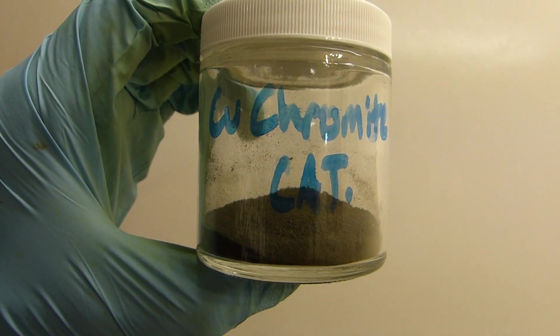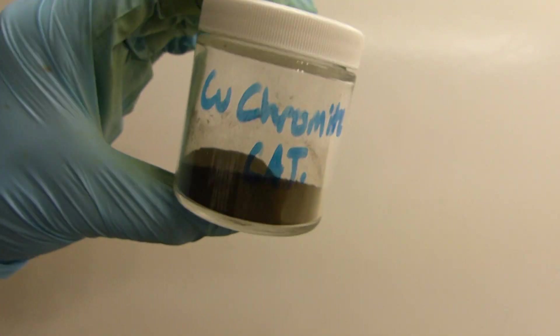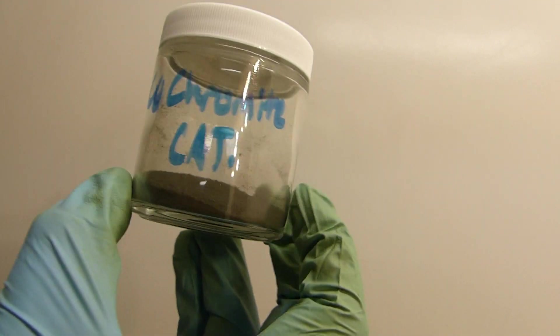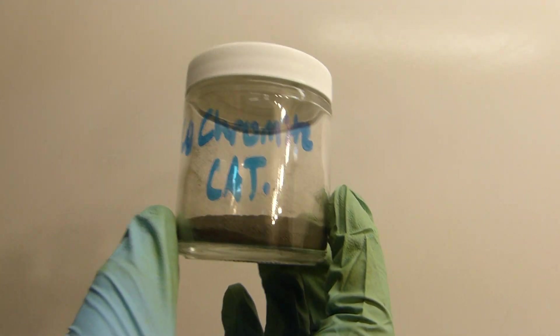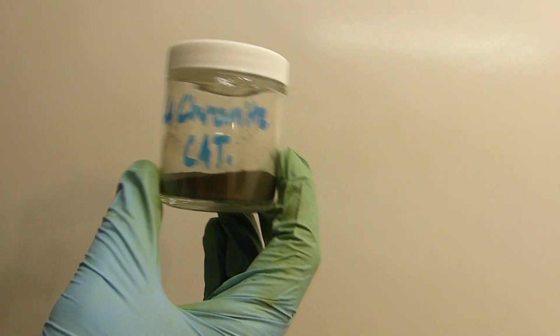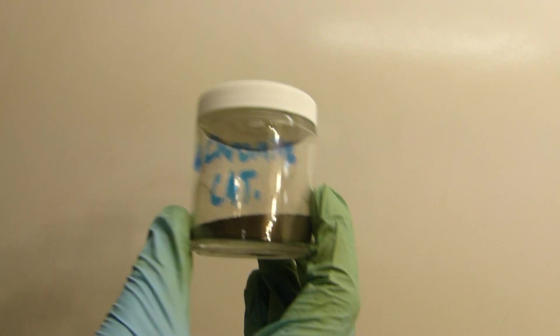So here's the final yield. It's 12.4 grams of a coarse gray-green powder that is copper chromite. Now this will be used in an upcoming video where I manufacture pyridine from niacin by running a decarboxylation on it.